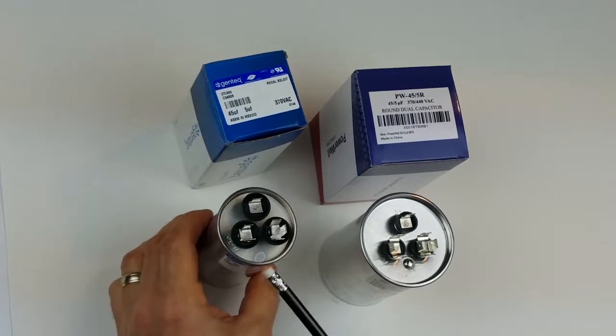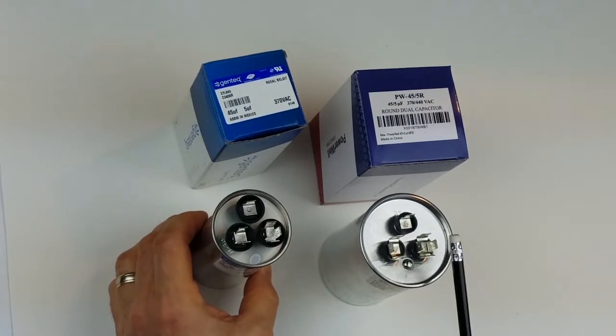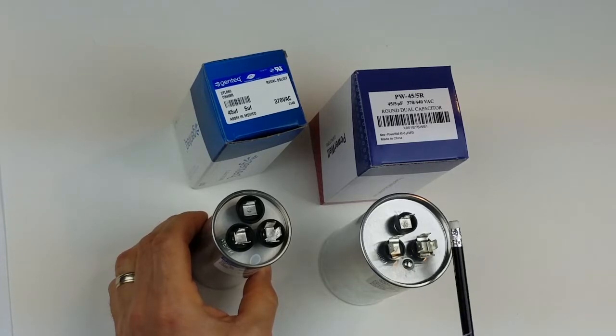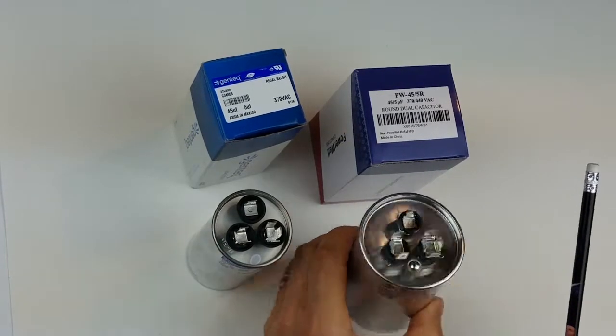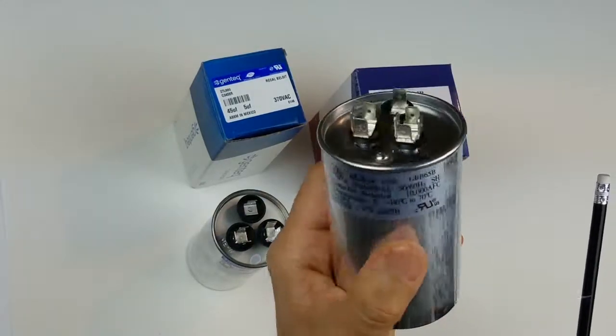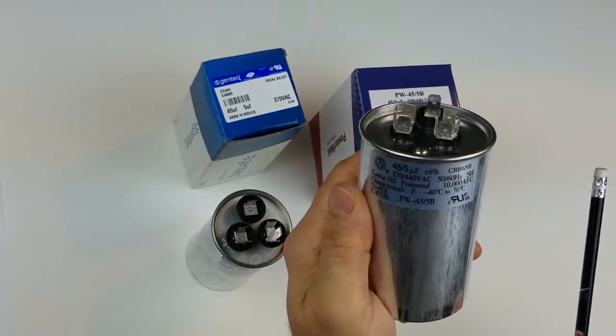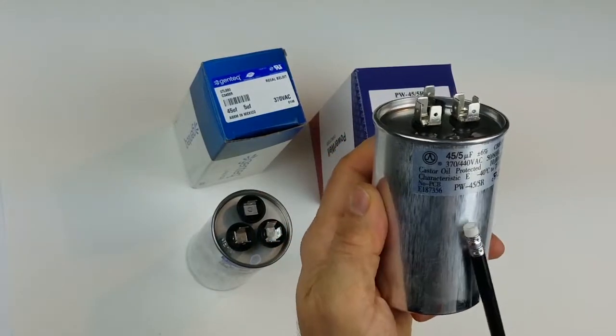Why is one of them supposed to be only 370 and the other one for 370 or 440? That means the Power Well capacitor is just made better with better insulation and better materials so it can withstand voltage up to 440 volts.